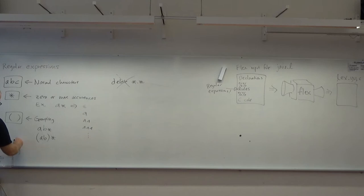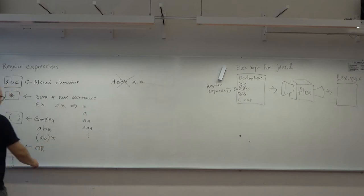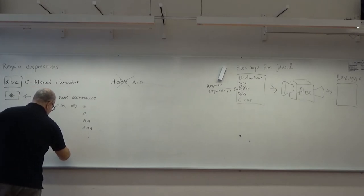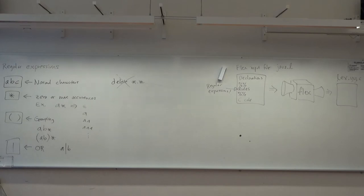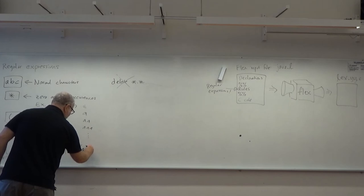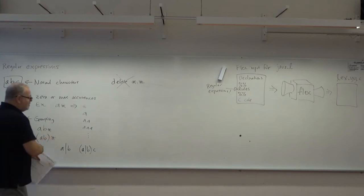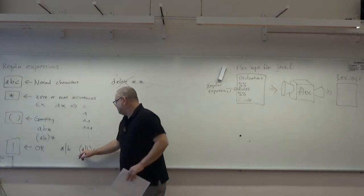You also have the OR sign, meaning one or the other. For example, A or B means it's either A or B. You can combine this with parentheses — so (A|B)C means A or B followed by a C, always a C. It will not match both A and B together, because it's one either A or B, not both.